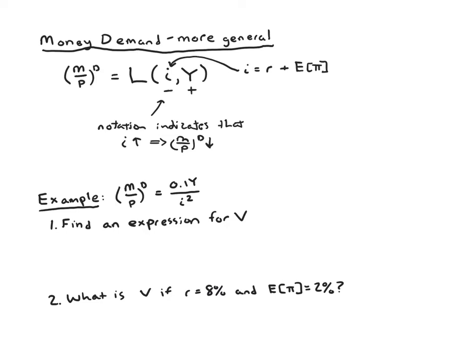So here we have an example of money demand is 0.1 Y over I squared. As expected, as Y goes up, money demand goes up. As I goes up, money demand goes down. So this sort of fits with what we've been talking about.